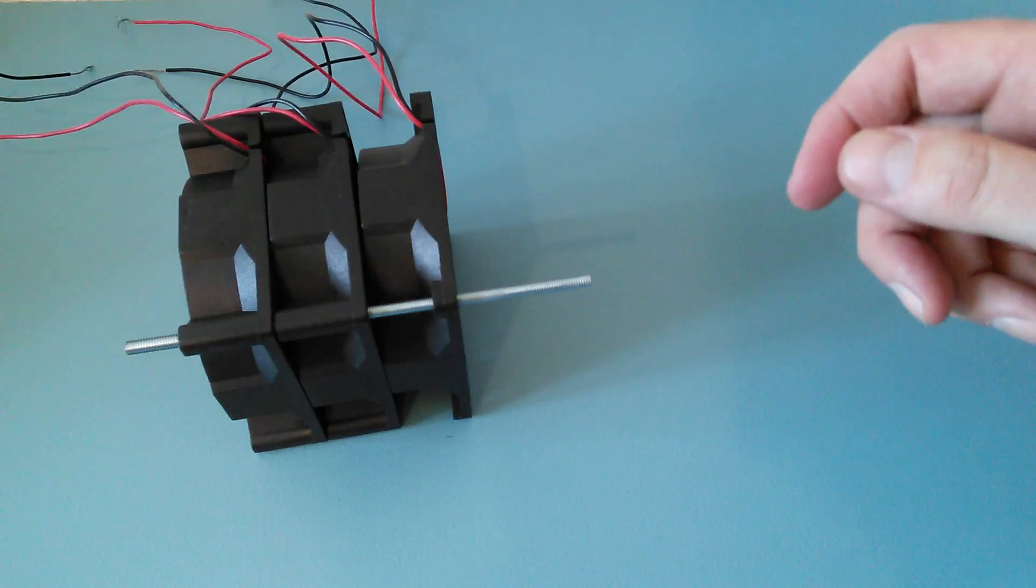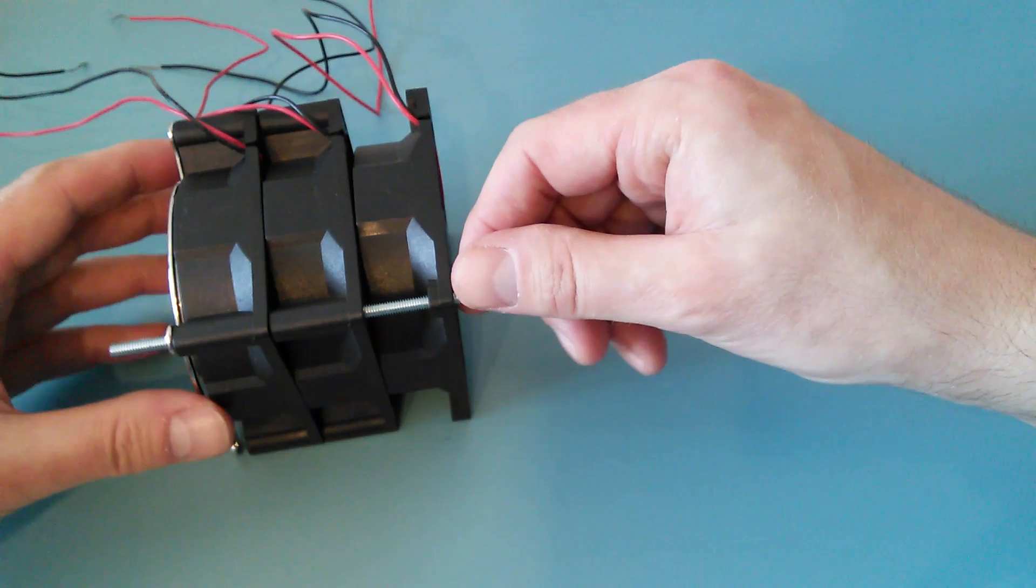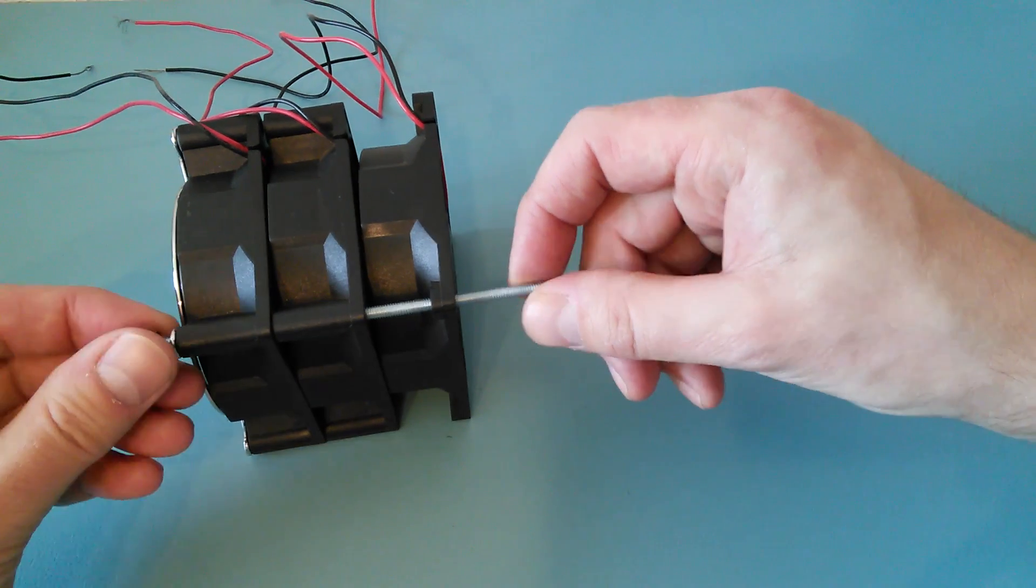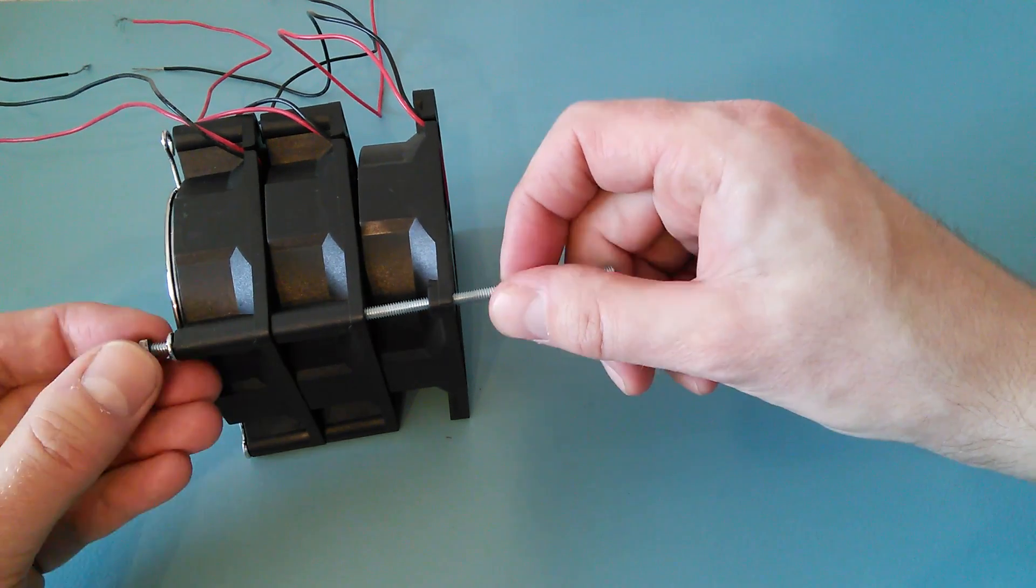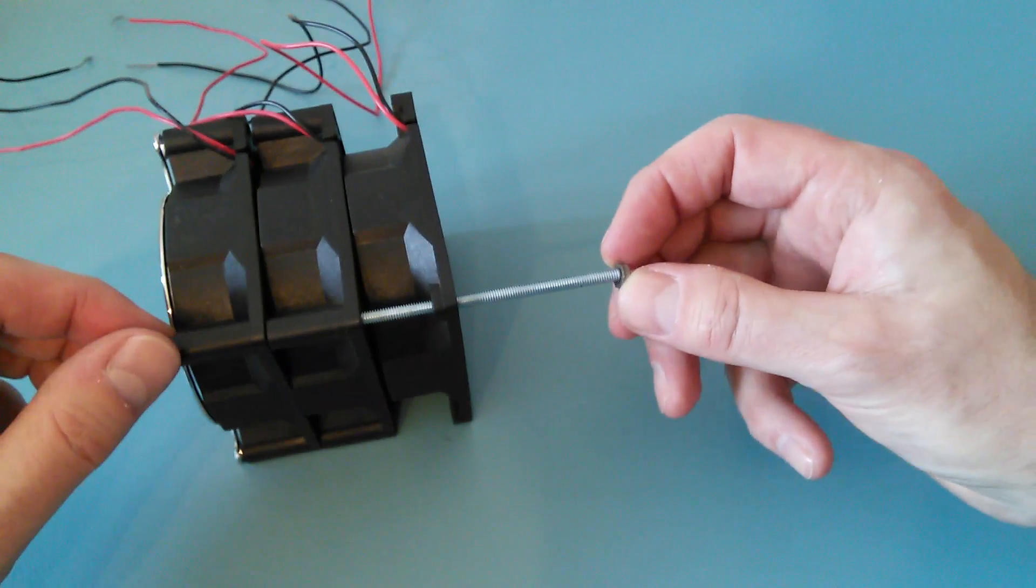Insert the rod in the mounting hole of each fan. Take a grill and secure it with a nut. Thread on another nut to lock everything in place.